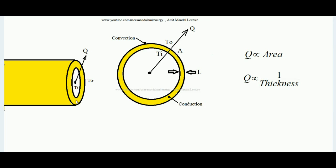Let me show you the cylinder with this arrow. The yellow colored entity is the insulation. The inner temperature is Ti and the outer temperature is To, with Ti greater than To. Since inner temperature is higher than outer temperature, heat moves in the radial direction. Here I am showing the cut section and magnified view of the cylinder — the inner surface temperature is Ti and the outer surface temperature is the environmental temperature To.